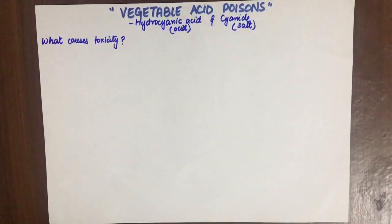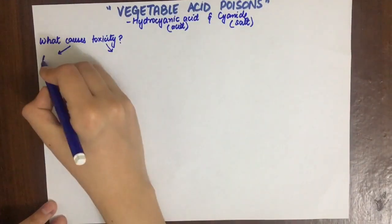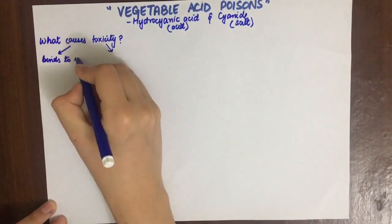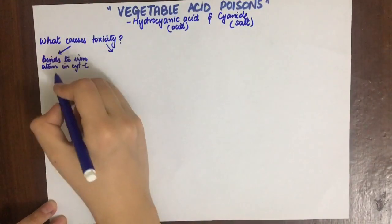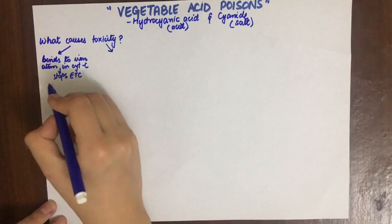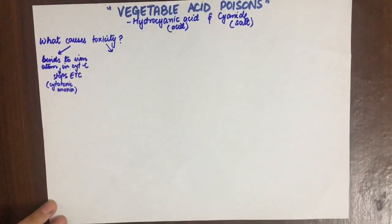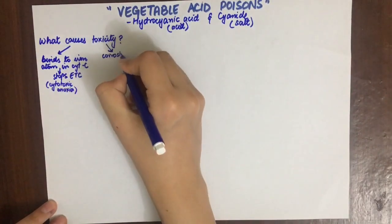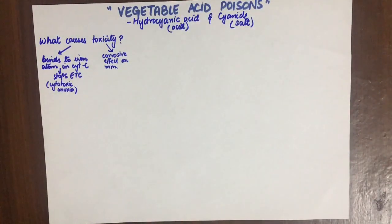How does cyanide cause toxicity? It does this in two ways. First, it binds to the iron atom in cytochrome C oxidase and thus stops the electron transport chain. It causes histotoxic or cytotoxic anoxia - that is, the blood is properly oxygenated but oxygen cannot be utilized. Second is its corrosive action on mucous membranes.